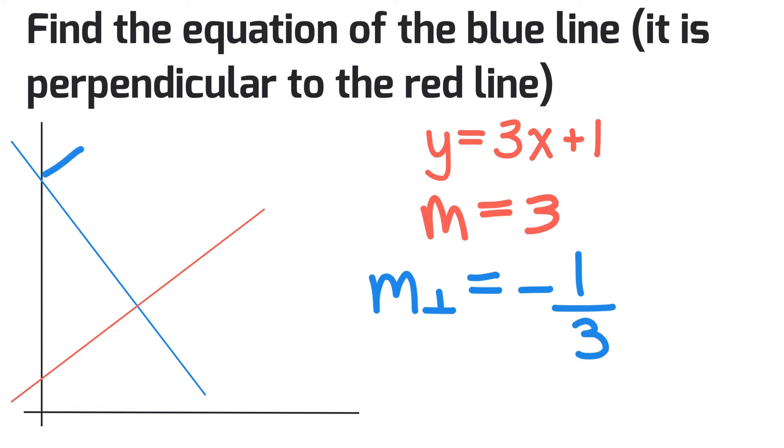Looking at this graph, we can determine the y-intercept. From the graph, we see that b = 7.